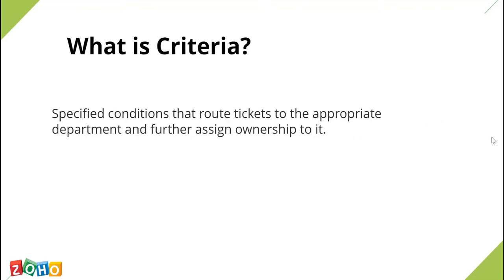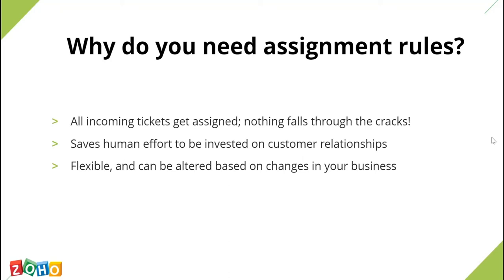So what is a criteria? It is the rule based on certain specified conditions that route tickets to the appropriate department and further assign ownership to it. Now let's see what are the benefits of assignment rules. Assignment rules ensure that every time someone creates a new ticket or moves a ticket to a new status, it is automatically assigned to one of your agents — you need not sift through the ticket backlog and manually assign tickets. You can also trigger an assignment rule when tickets are updated in your help desk. A ticket assignment rule follows a workflow which is as follows.